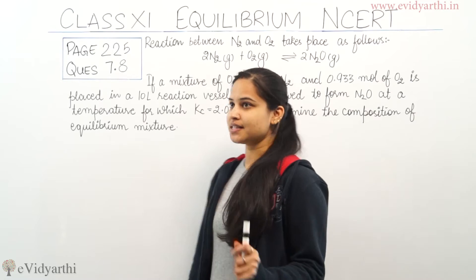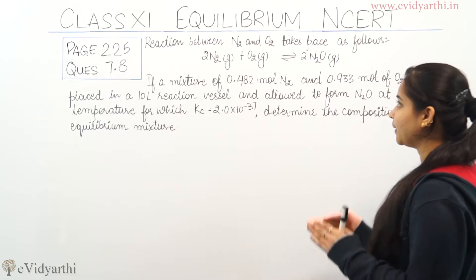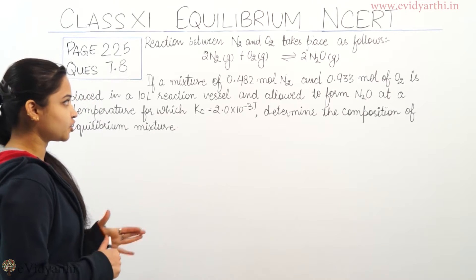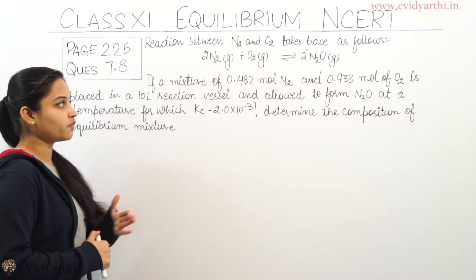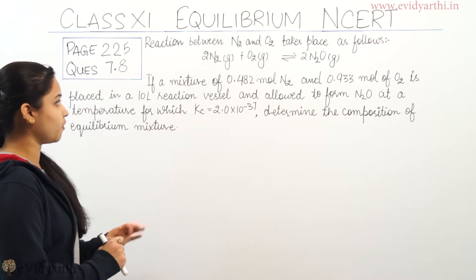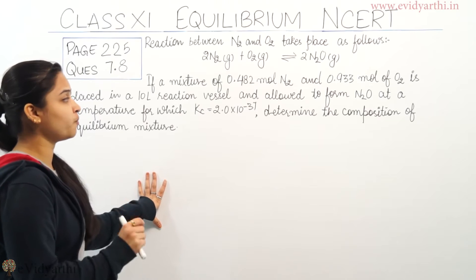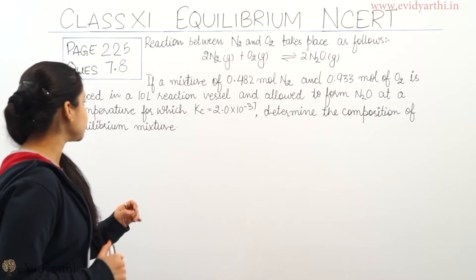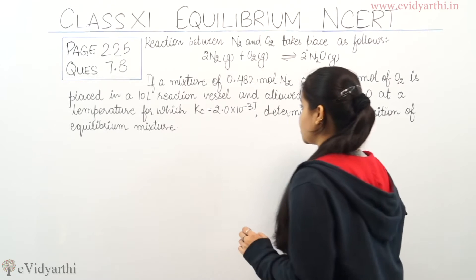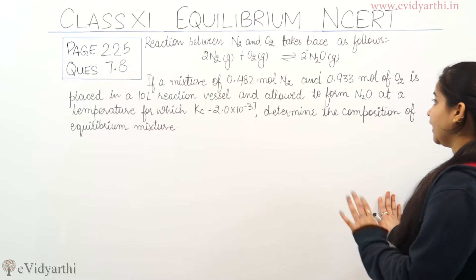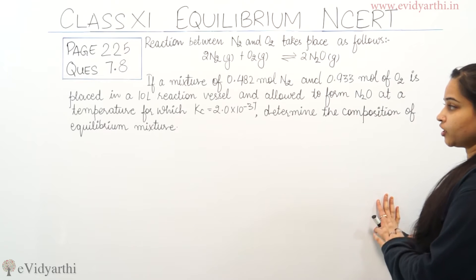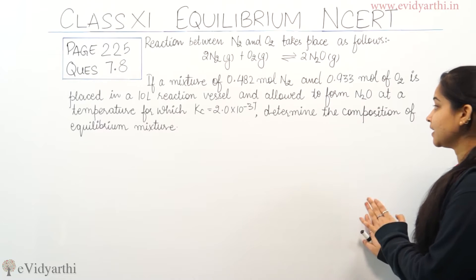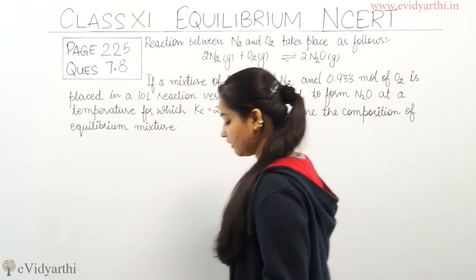Let's see what the question is. The reaction between N₂ and O₂ takes place as follows: 2N₂(g) + O₂(g) ⇌ 2N₂O(g). If a mixture of 0.482 mole N₂ and 0.933 mole of oxygen is placed in a 10-liter reaction vessel and allowed to form N₂O at a temperature for which Kc equals 2.0 × 10⁻³⁷, determine the composition of the equilibrium mixture.